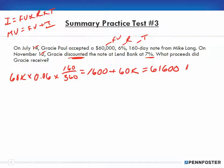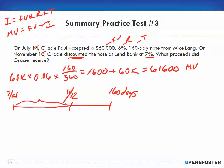We add that to the $60,000 note, so that's $61,600 as the maturity value. Next, let's draw it out. We had July 14th for 160 days, and on November 12th it's going to be discounted.